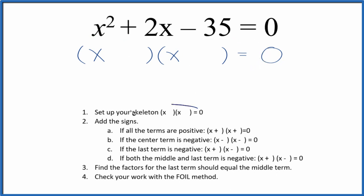First off, we want to set up a skeleton equation. This is our skeleton equation right here, because then we can add the signs. When I look up here, I have a positive and then a negative term. So if the last term is negative, we're going to put a positive and negative in our skeleton equation like this.